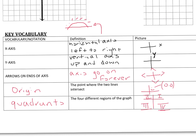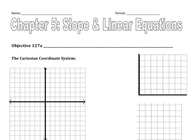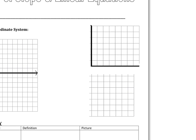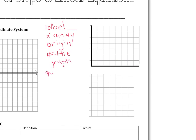The four different regions of the graph are called quadrants. Going counterclockwise with Roman numerals: one, two, three, and four. Pause the video if you need to get down any of these notes, then we're going to do a little bit of practice. I want you to look at these two graphs and label some different parts. On the first one, label the x and y axis, the origin, number the graph, and label the quadrants.